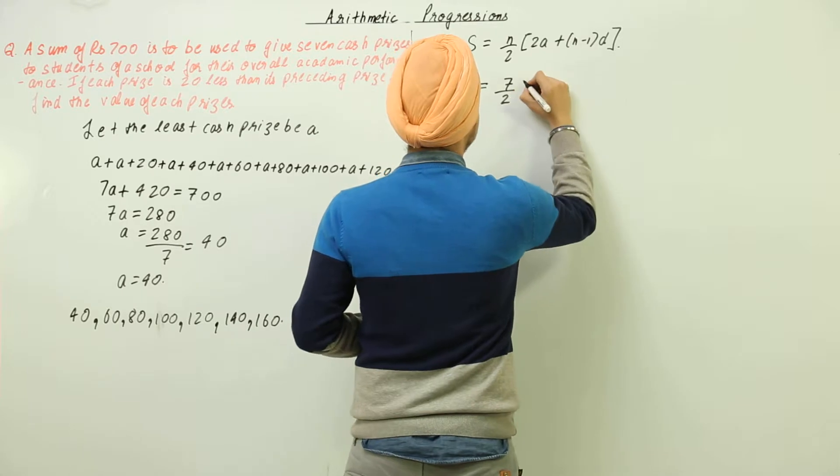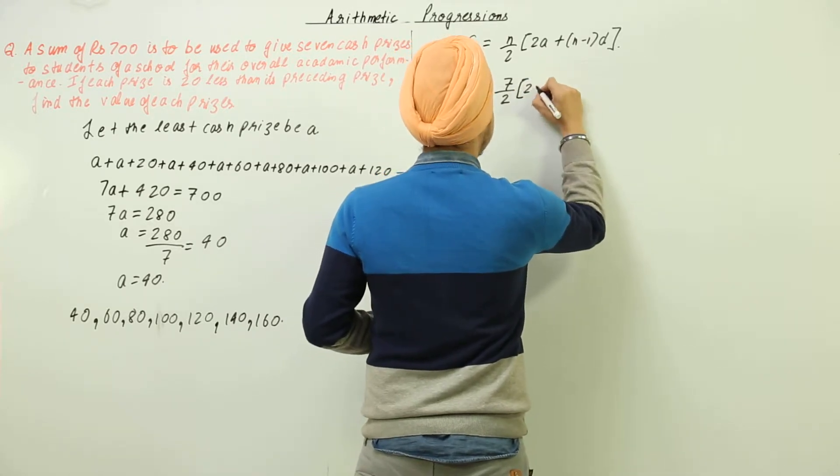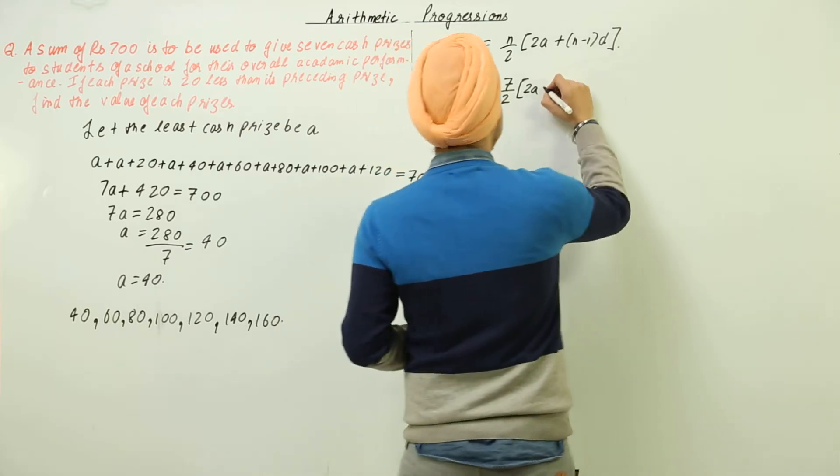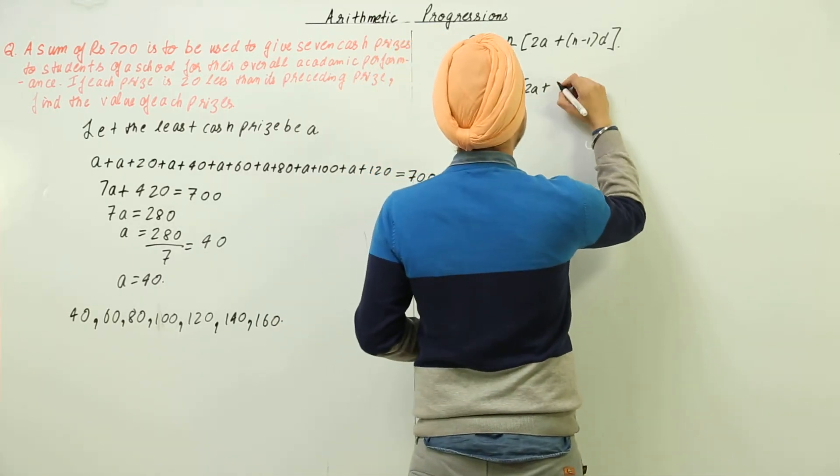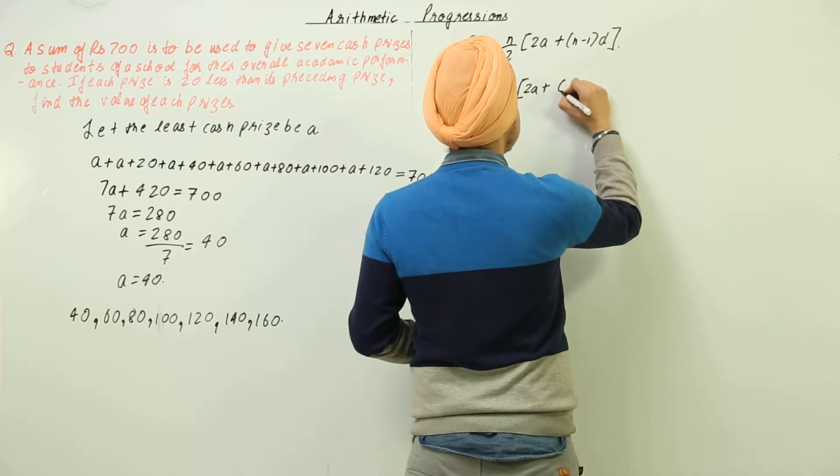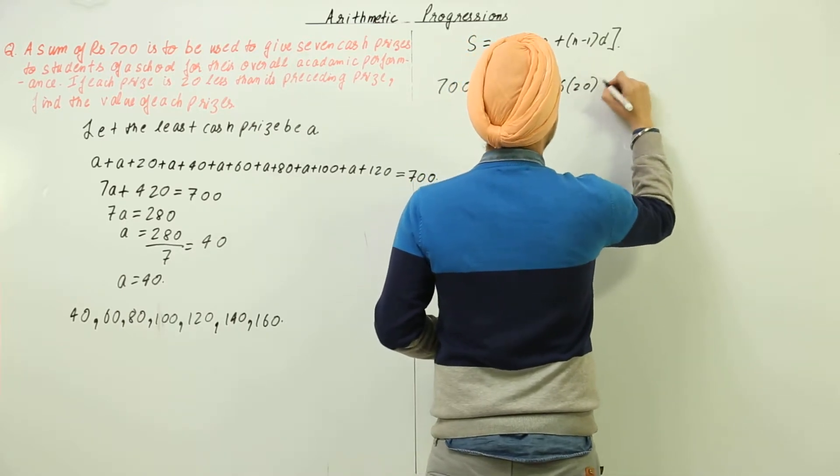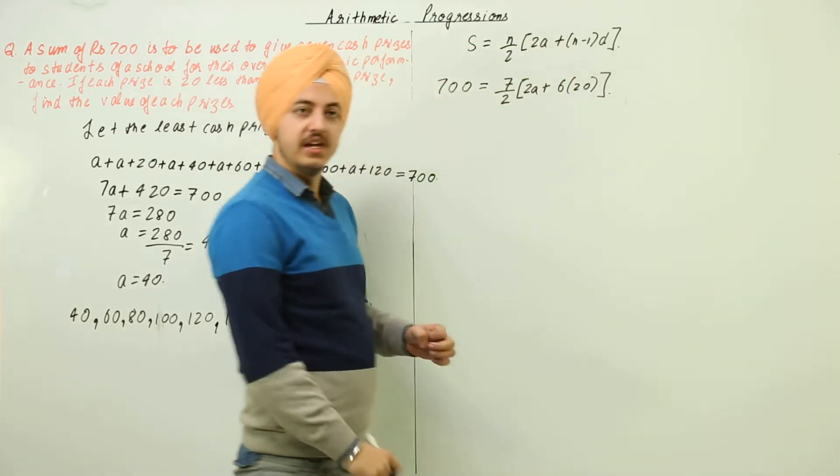So this is 7 by 2. We don't know the value of a. 2a plus we know n, n is equal to 7, n minus 1 is equal to 6, and we know the value of d that is equal to 20.